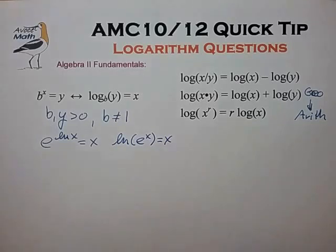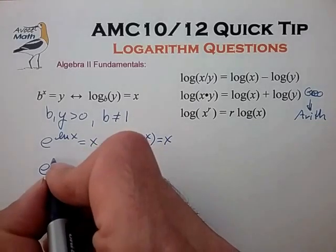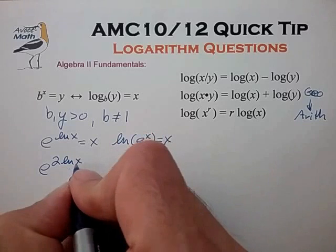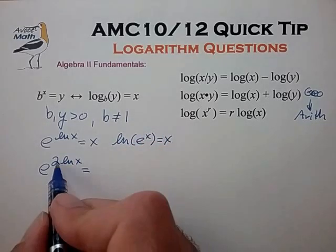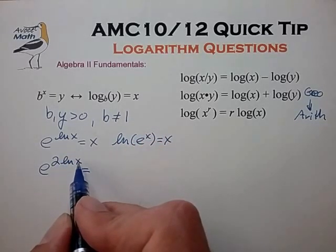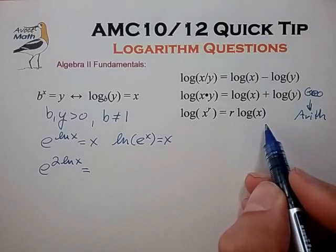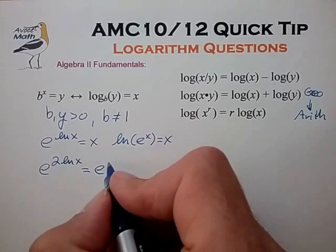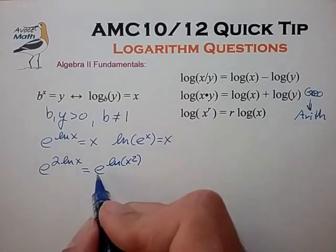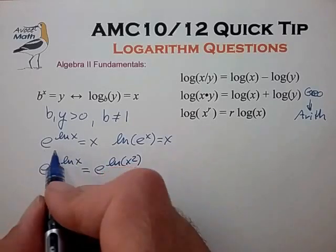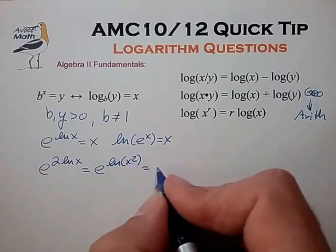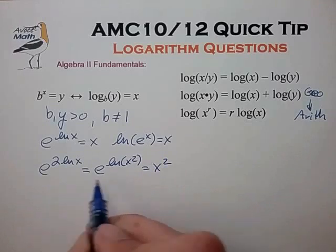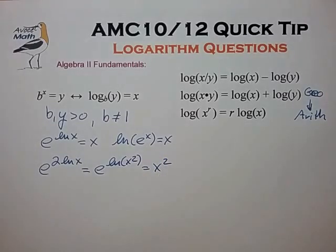And another more complicated example is say e to the 2 natural log of x. We can bring the 2 inside the natural logarithm using this third relationship. And now we have the e to the natural log and we know what to do with that. That just brings x squared down. So this is a very handy tool to use for working with natural logarithms.